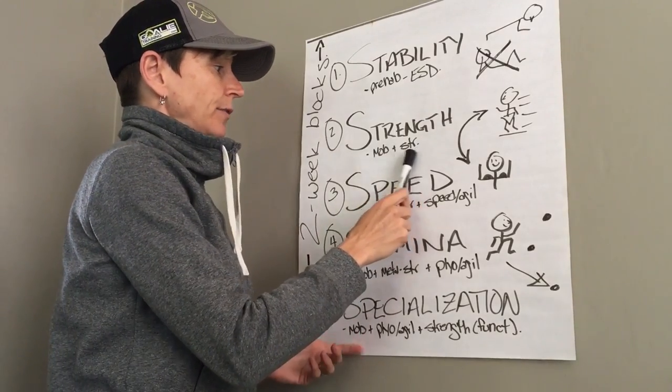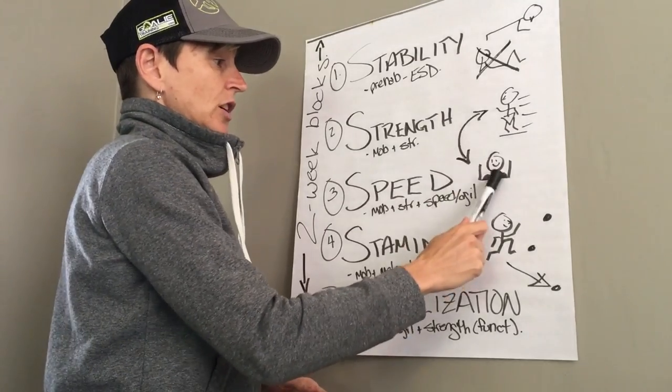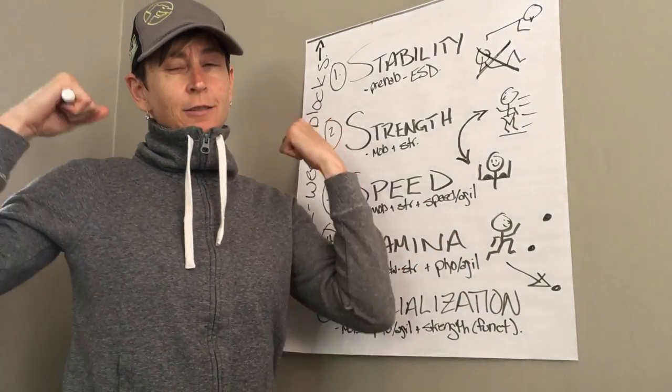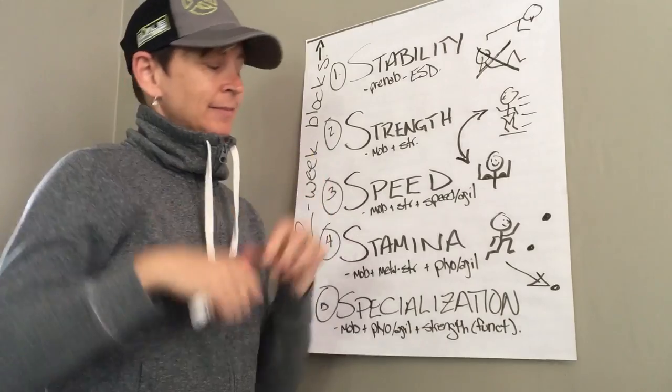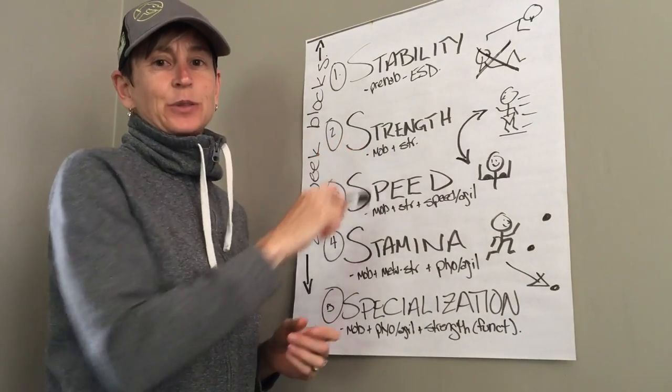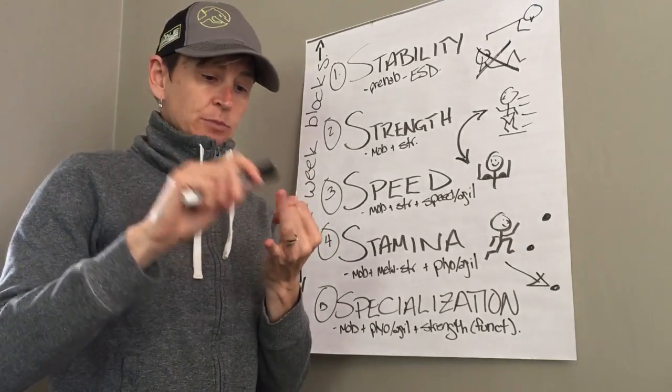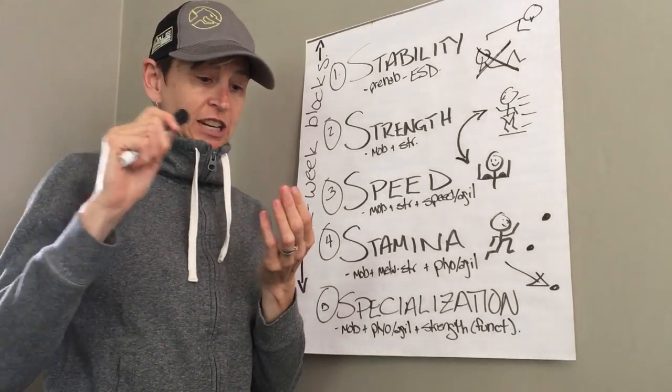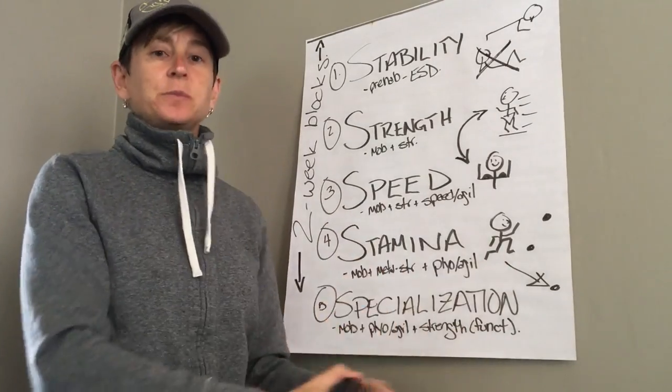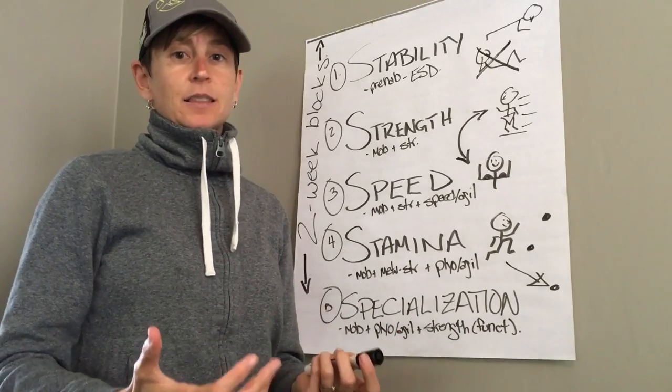Then we go into your strength phase, working on mobility and strength. This needs to be functional type of strength. If you're using knee extension machine, hamstring curl machine, leg press machine, groin machine, chest press machine, rowing machine, lat pull down machine, you're really losing a lot of the potential there.